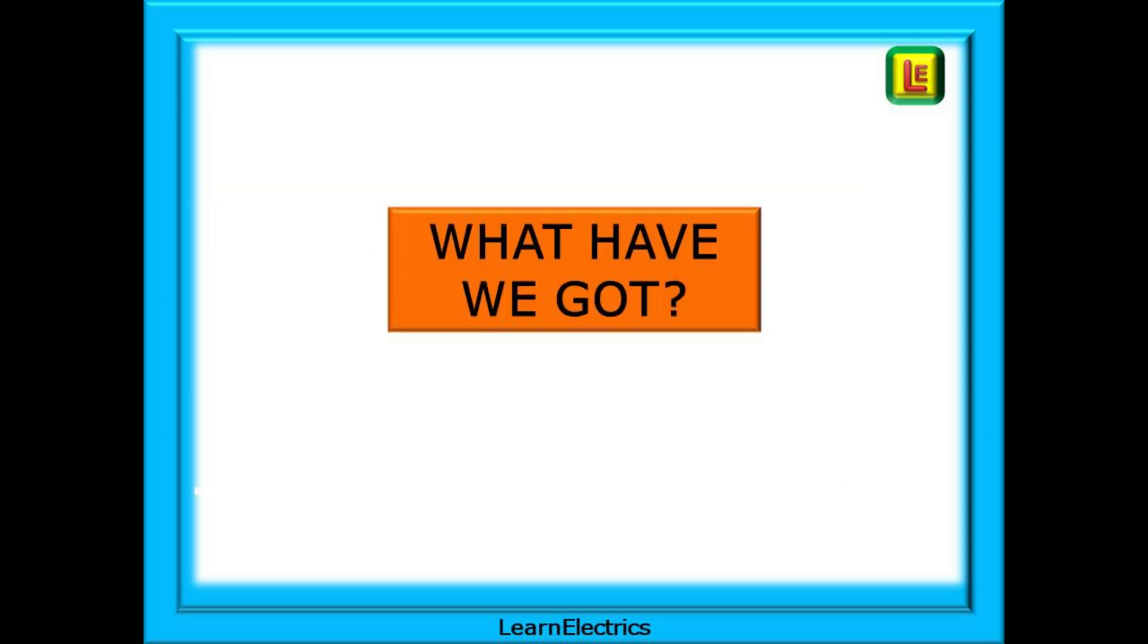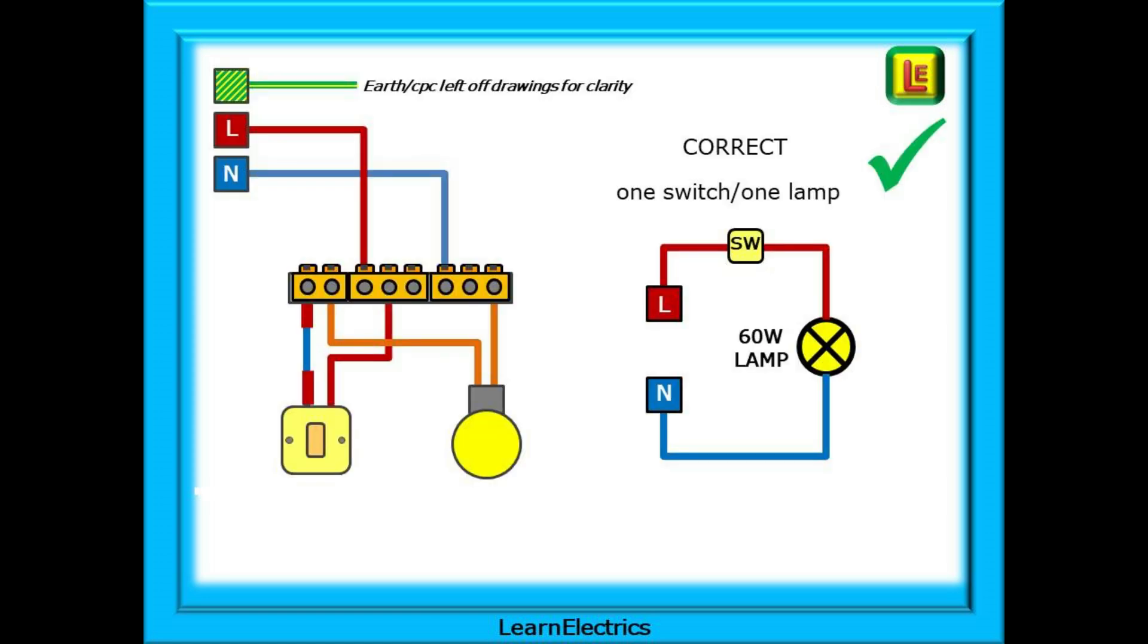We can have a closer look at what we've got and how they look as schematics. This is the single lamp from earlier, and on the right is how it might be shown in a schematic drawing. This drawing makes it much easier to visualize what is going on. We have the incoming line that goes to the switch, from the switch to the lamp, and then completing the circuit back to the neutral connection.